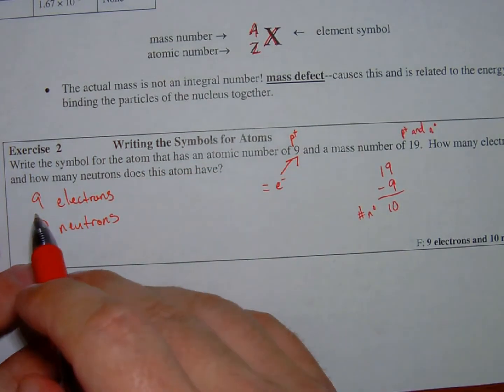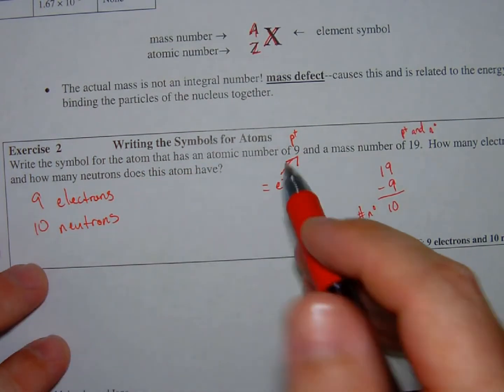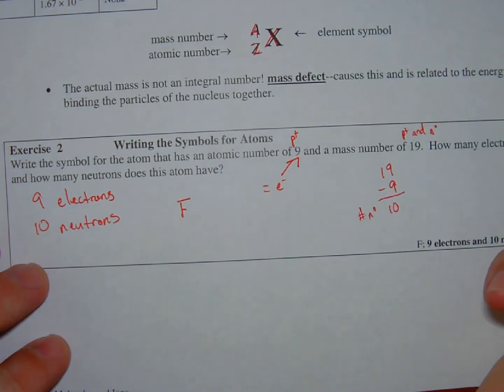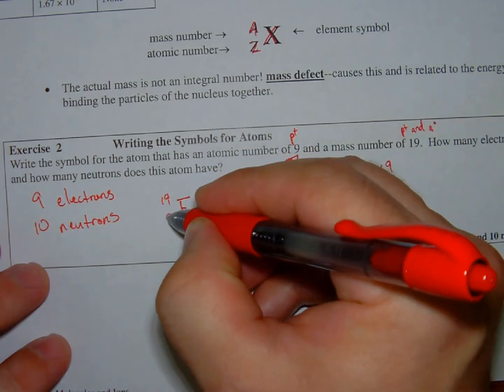And if you really care, we'll look at atomic number nine on the periodic table, and we'll find that that is actually fluorine. It'll be fluorine. So we'd write that fluorine.